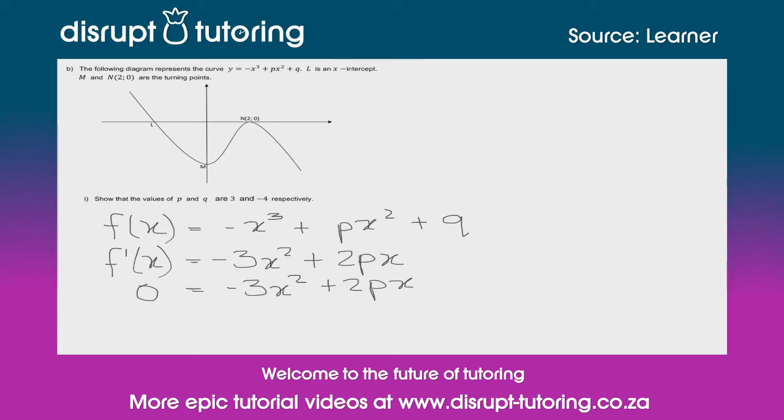Now what I need to do is I need to get rid of this x, because we want to be left with one variable to solve for. And remember what I said a little earlier, we've got these two turning points, and they've given us the coordinates of one of them. So I can put in the two into the x, because I know that is going to be one of our turning points. So what that would be is it would be minus three, that'll be two squared, plus 2p times two.